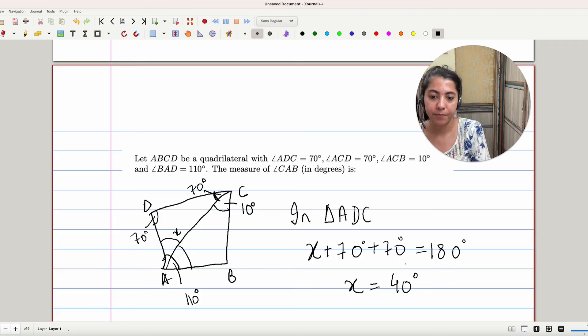That gives us the value of X as 40 degrees. Can we find CAB? Yes. We can see that angle BAD is divided into two components, CAD and CAB. Since we have the value of CAD that is 40 degrees, we can just subtract it from 110. That gives us our answer as 70 degrees. So, the value of CAB is 70 degrees.